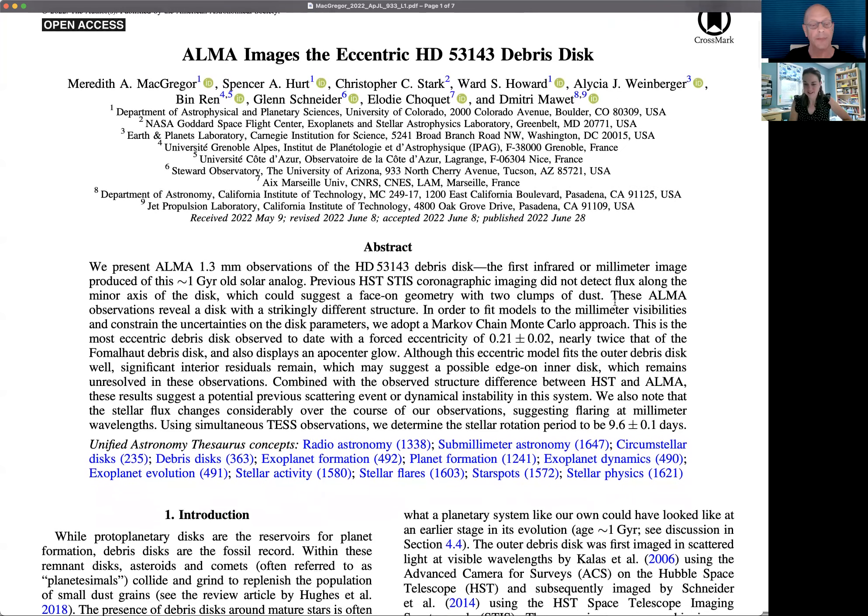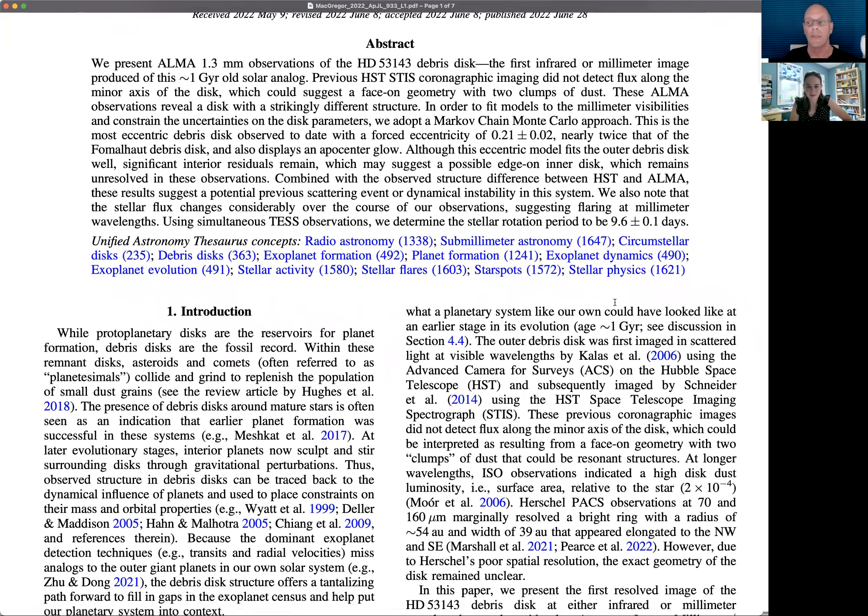HD 53143 is a debris disk. What do we mean by a debris disk? If we think about planet formation, planetary systems form in these dust and gas-rich disks that we call protoplanetary disks. ALMA has taken tons of pictures of these. Then over time, the planets actually clear most of the material out of the disks. You lose all the gas, and what you're left with is remnant comets and asteroids - basically like our Kuiper belt and asteroid belt that we call the debris disk. They're really the end stage of planet formation.